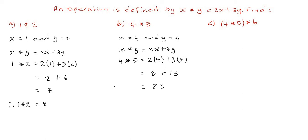So 4 asterisk 5 is equal to 23. Now for part C, we are given (4 asterisk 5) asterisk 6. To solve this we use the result we just found: 4 asterisk 5 equals 23. So we replace what is in the bracket with 23, giving us 23 asterisk 6. From this, 23 is associated with x, so x is equal to 23.